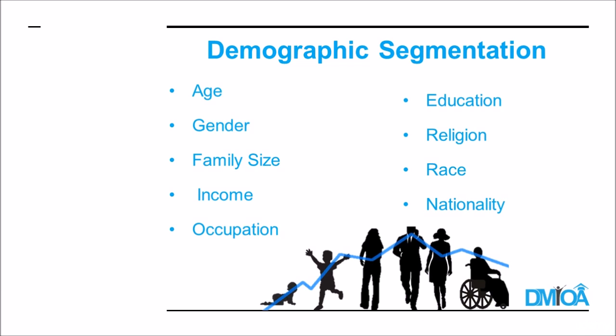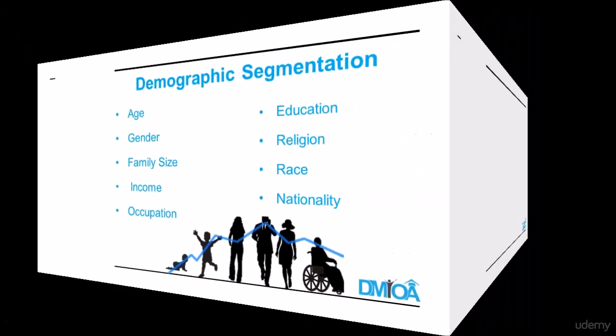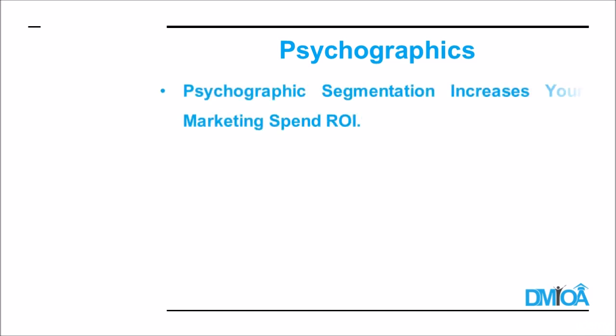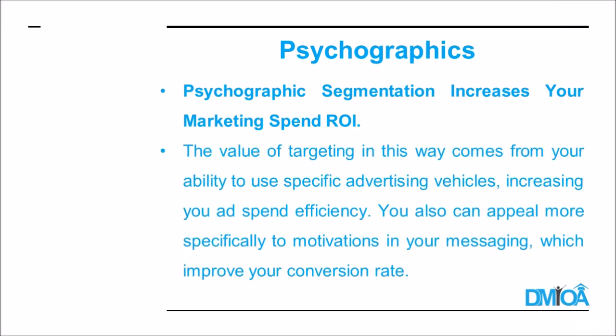This usually works quite well because your customers often have wants and needs that are based on these categories. Psychographic segmentation is sometimes referred to as behavioral segmentation. It divides the markets into groups based on not so visible characteristics such as lifestyles, attitudes, expectations, and activities of your target market. These factors can also be used in conjunction with demographic segmentation.